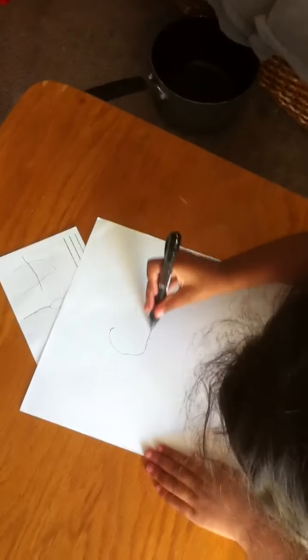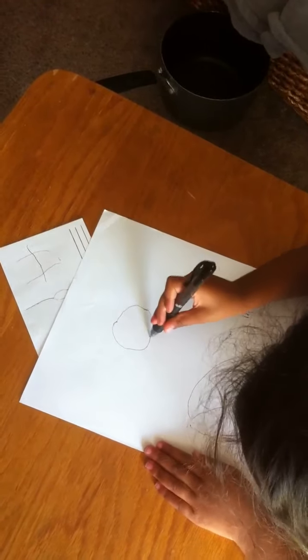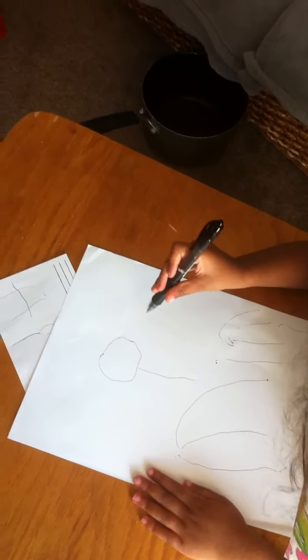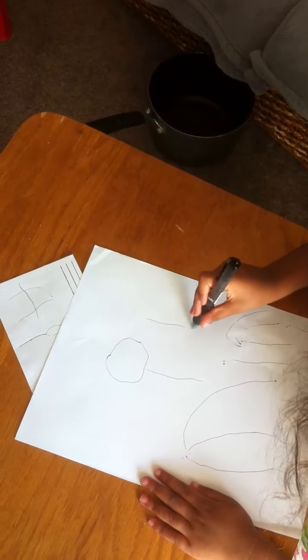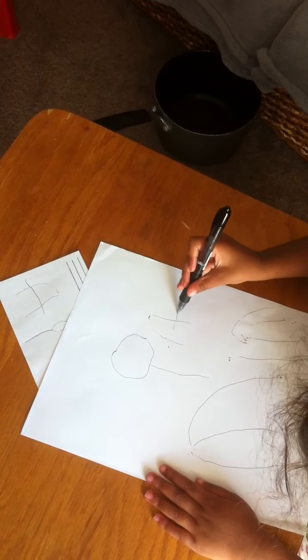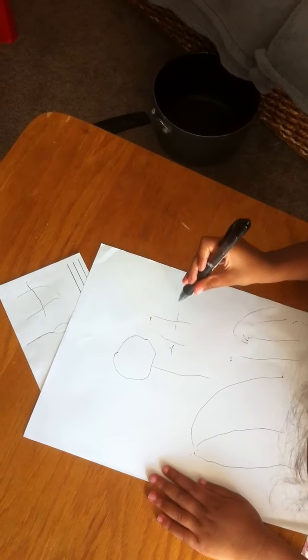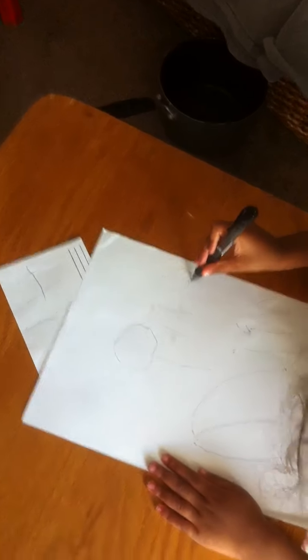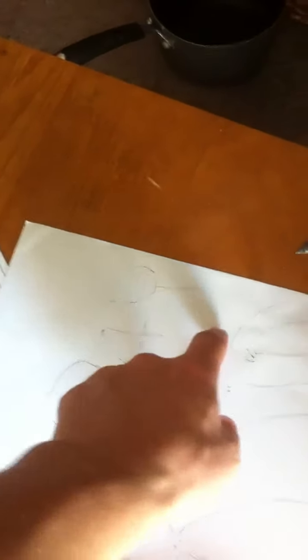How about a P up here? Do a P for Papa. That's close. And an A. And another P. The line's supposed to come down here, but that's okay. And another P.